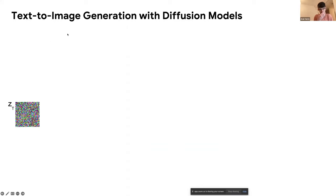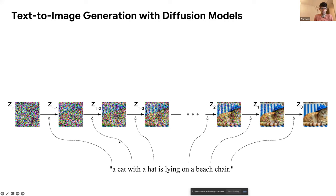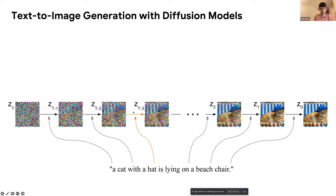To understand our method, we need to look at the text-to-image model architecture and its connection to the text. All these diffusion models, during inference, start with random Gaussian noise for each pixel. The diffusion model gradually denoises it until we get the clean image. Text-to-image diffusion models are also conditioned on a text prompt, so at each denoising step there is a connection between the text prompt and the pixels of the image.